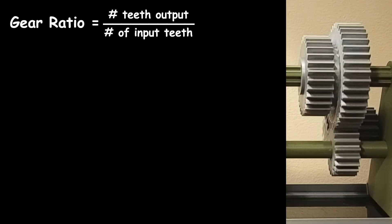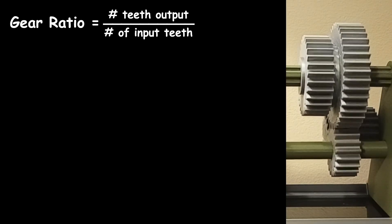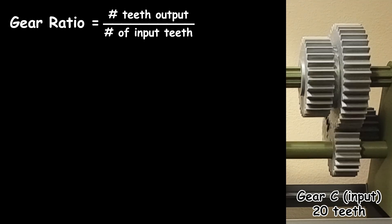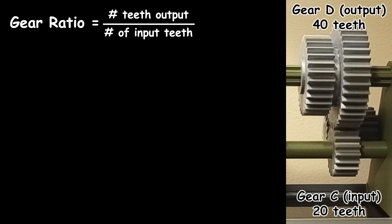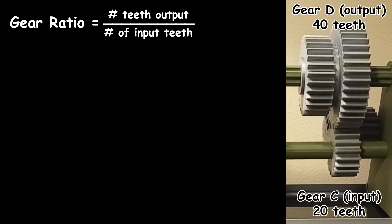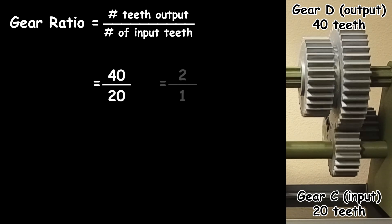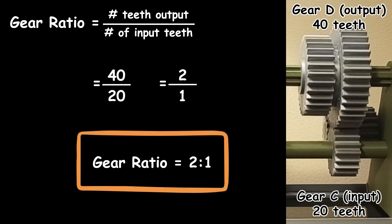Now let's zoom in on Gear C and D. Gear C is the input between the two with 20 teeth, and Gear D is the output gear with 40 teeth. Plugging in the numbers gives a ratio of 2 to 1.